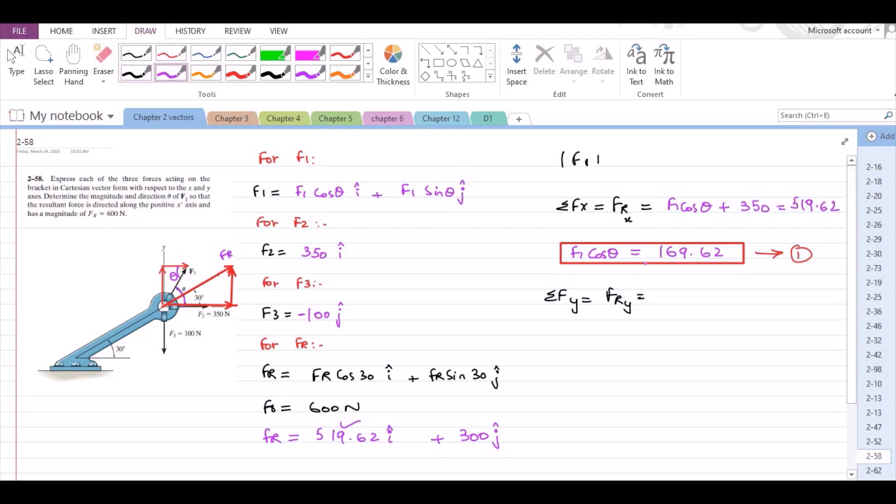This equals F1 sin theta plus negative 100 equals 300. So from here this equation becomes F1 sin theta equals 400. That is our equation 2.